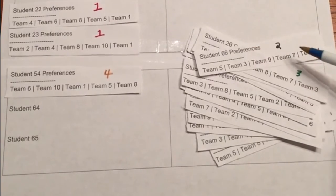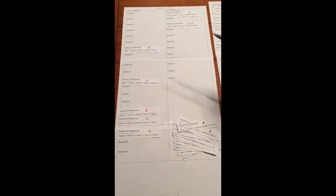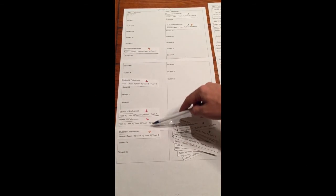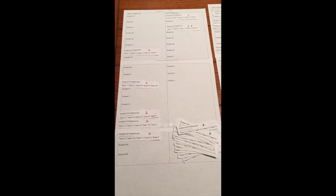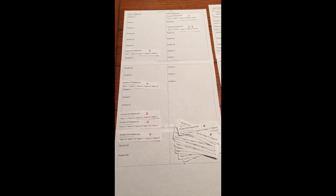In our example, Student 66 has Skill 2, and Team 1 has five members, none of which have Skill 2. Therefore, Student 66 is a good match for Team 1.